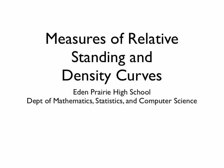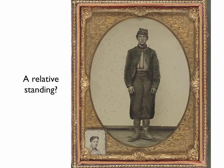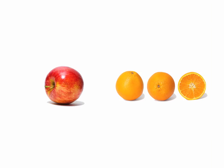Chapter 2 deals with measures of relative standing and density curves. We're going to start by talking about measures of relative standing — not your relative's standing, but instead a way to compare apples and oranges.